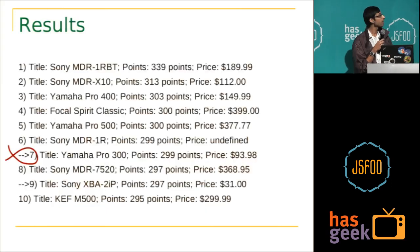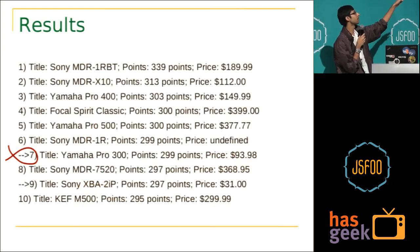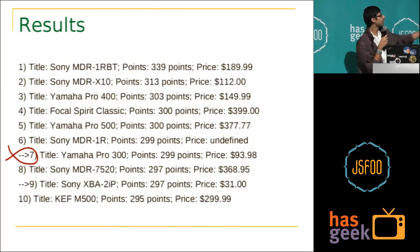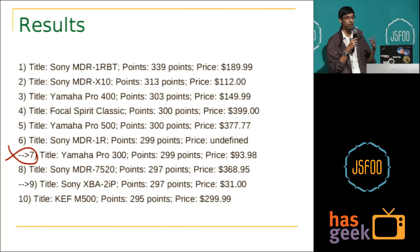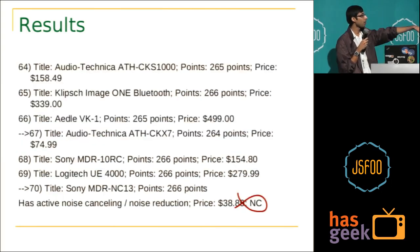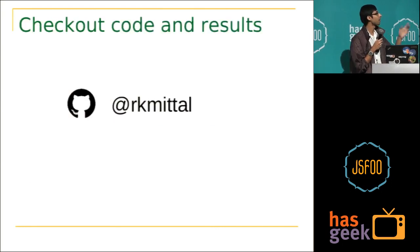Here are the results from my crawler. It basically lists down the rankings, the title of the headphone, the points, and the price — most importantly. And you see something like a funny arrow which indicates it's less than $100. So I was looking for a headphone which was less than $100, and my crawler just automatically marks something which is relevant to me. Apart from that, it also marks an NC at the end of the row indicating the headphone has active noise cancelling. You can check out the code at my GitHub and get back to me. Thanks.